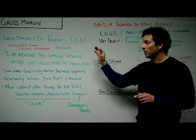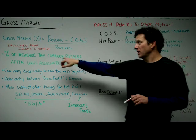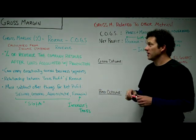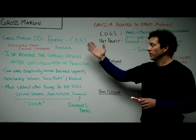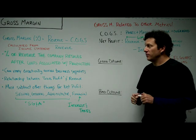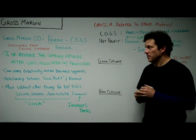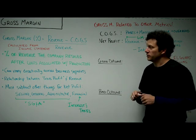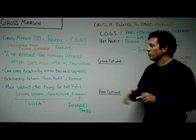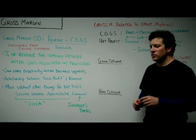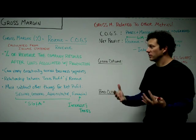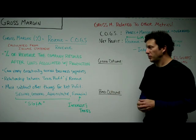So it's essentially how much money do I have left over to work with after the cost of producing my widget or my product — and that's a very important number. You're going to calculate this on the income statement because that's where you can find revenue and cost of goods sold, and often it'll be shown there. If not, it's very easy to grab those two numbers and calculate it over some period of time. It's the percentage of revenue that a company retains after the costs associated with production are taken away.